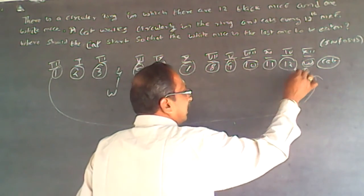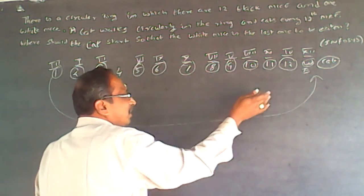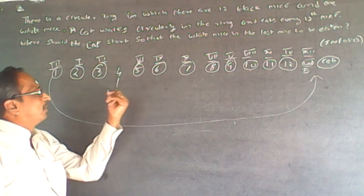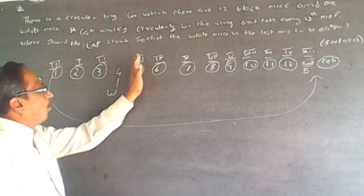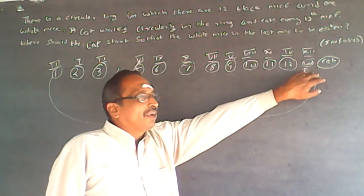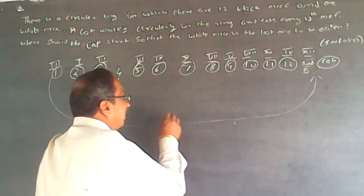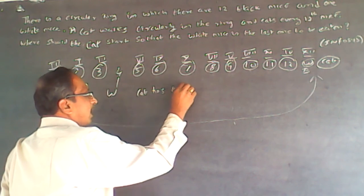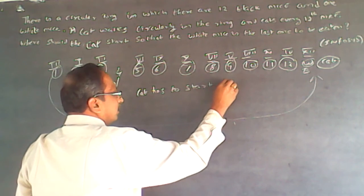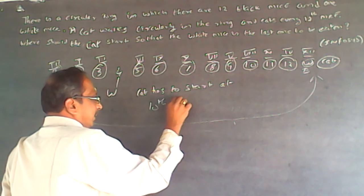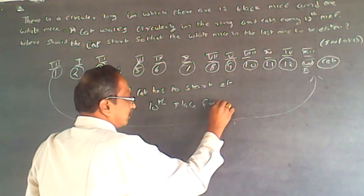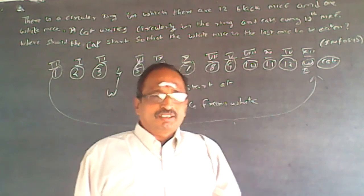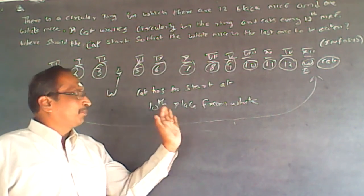Instead of white, I place a black mouse at the original fourth position, and I place white there. So where should the cat start? The question is: where should the cat start so that white is the last one to be eaten? White is here. Counting from white: 1, 2, 3, 4, 5, 6, 7, 8, 9 — the tenth place from white. The answer is: the cat has to start at the tenth place from white.